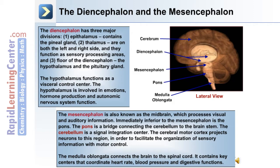The cerebellum is a signal integration center. The cerebral motor cortex projects neurons to this region in order to facilitate the organization of sensory information with motor control. The medulla oblongata connects the brain to the spinal cord and contains key centers that coordinate heart rate, blood pressure, and digestive functions.